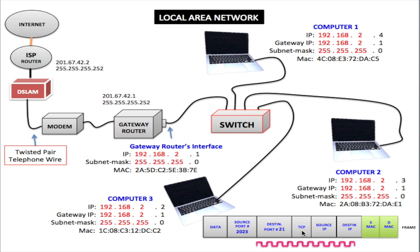TCP is the protocol. We also have UDP, which is for mostly video and voice — TCP is for everything else. We have the source IP address, which is the IP address that you are on, and the destination IP is the IP address that you're trying to get to — in this case it will be 2.2. The source MAC address is the MAC address of the computer you're on, and the destination MAC address will be the MAC address of the computer you're trying to get to, which is computer number three.